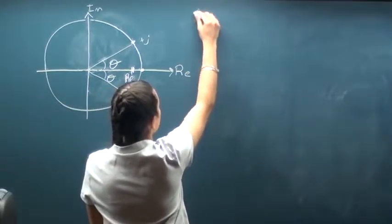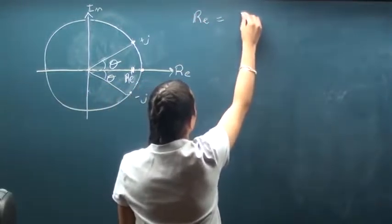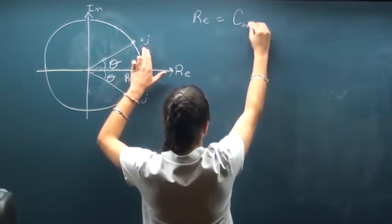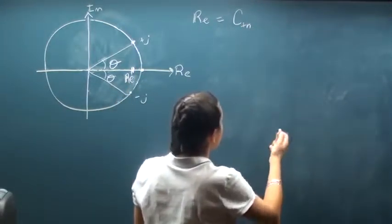And I'll also label here the theta at which they're at. So let's say that this real value is equal to the coefficient at positive j, or the positive nth iteration,